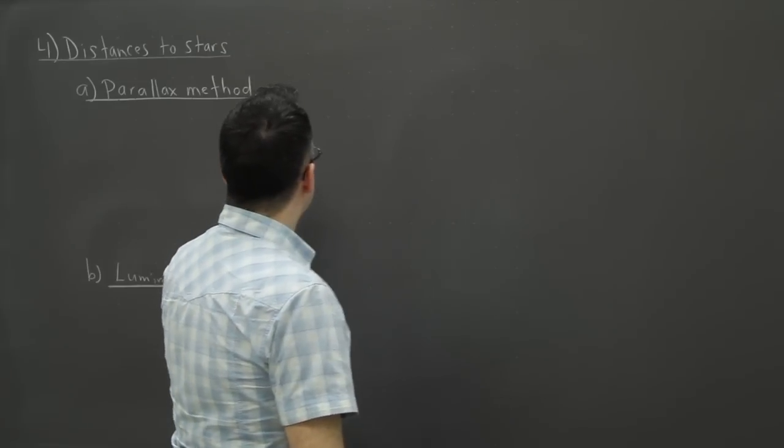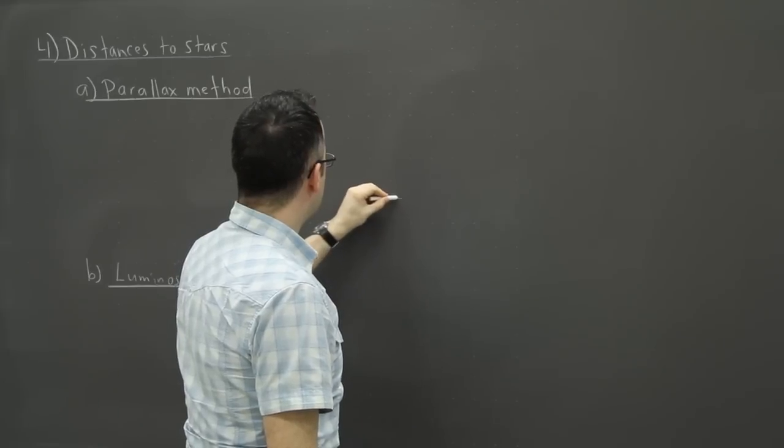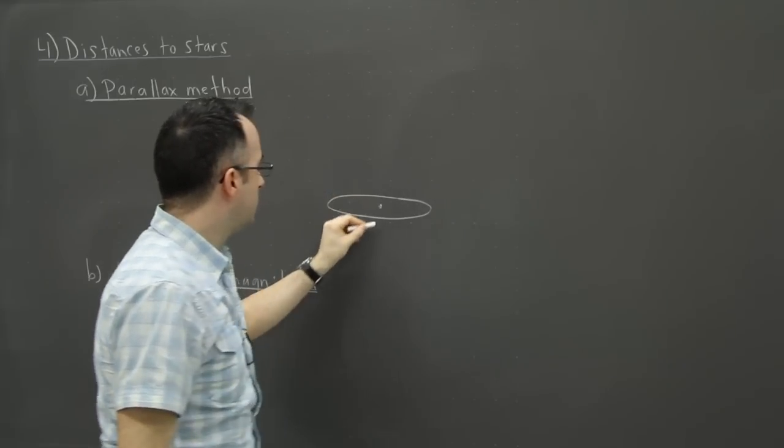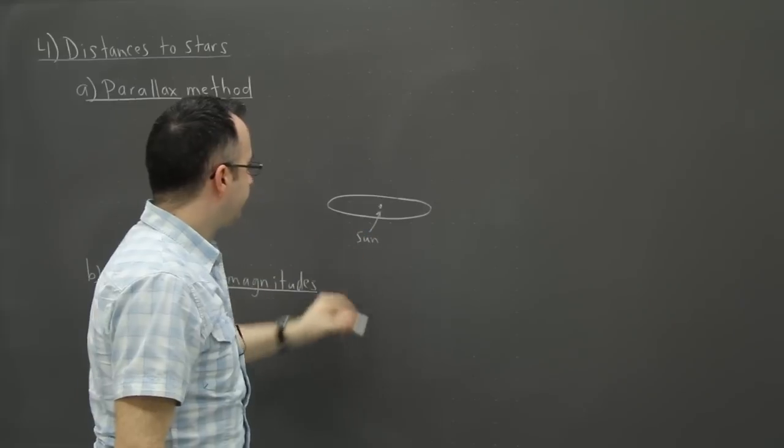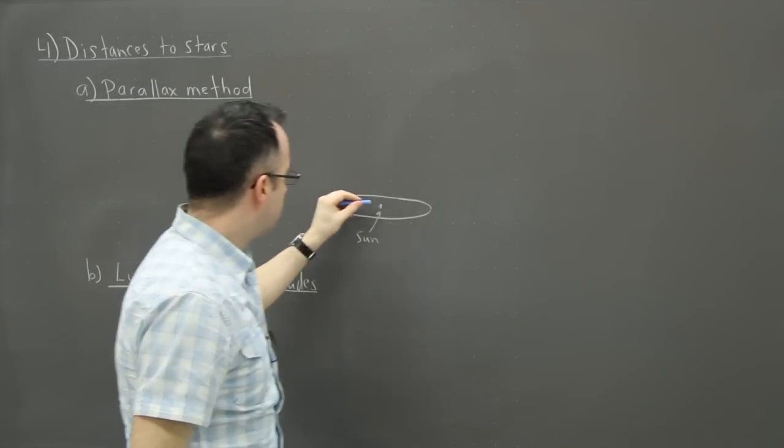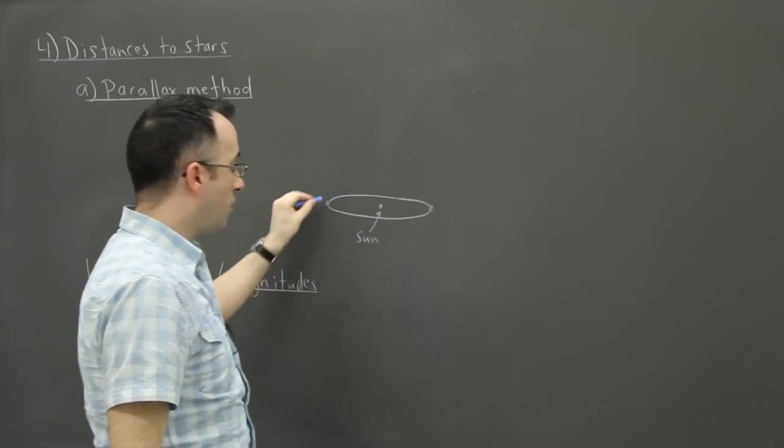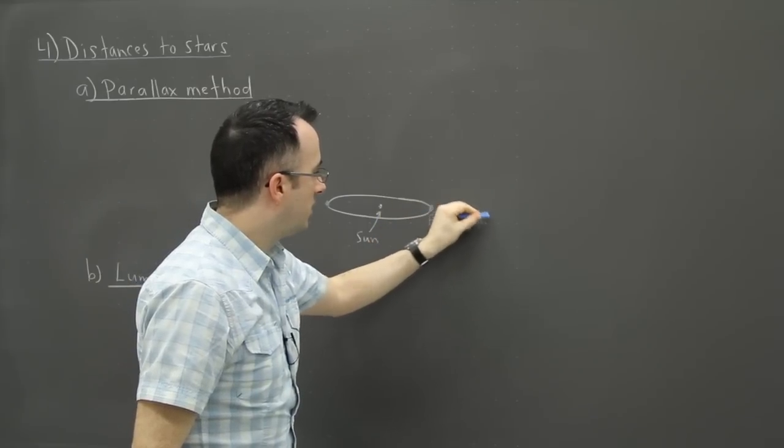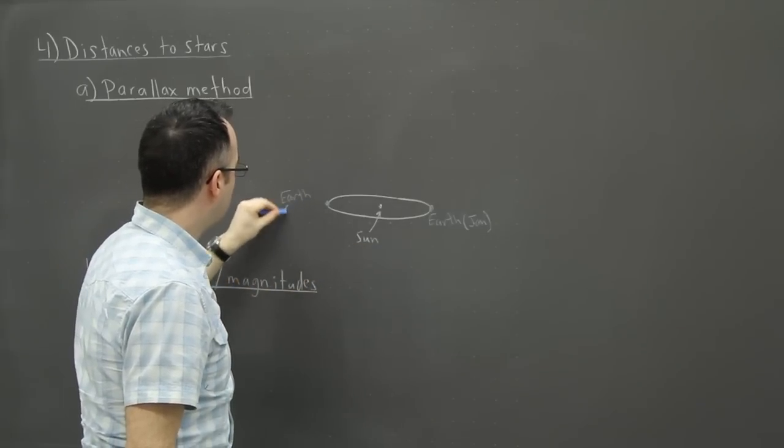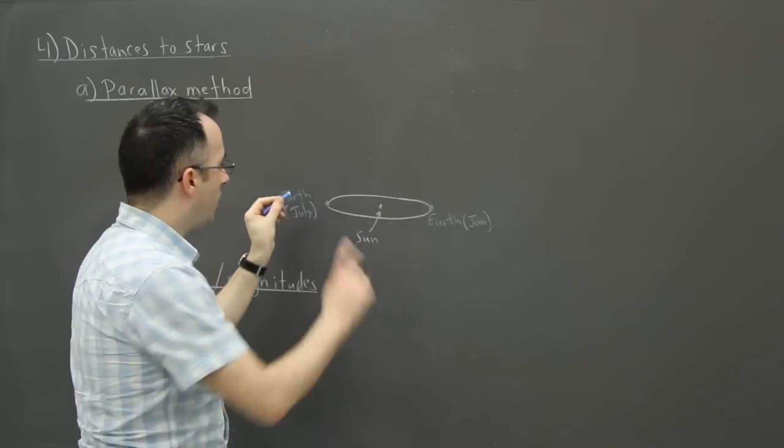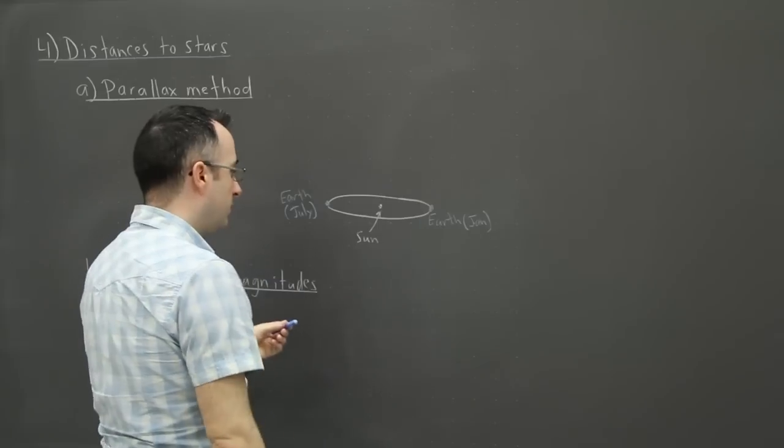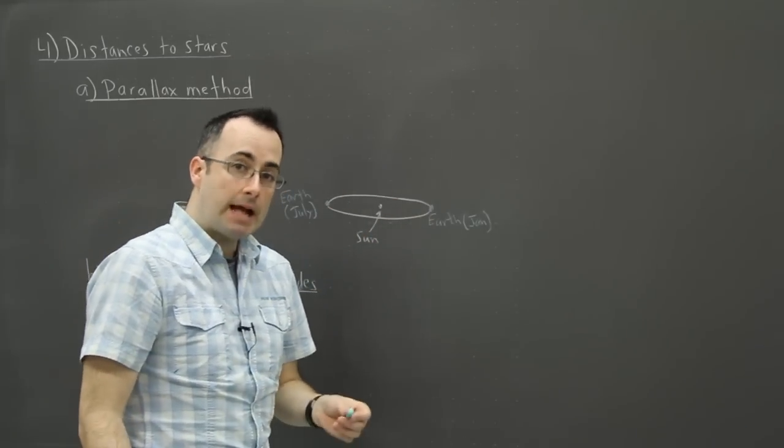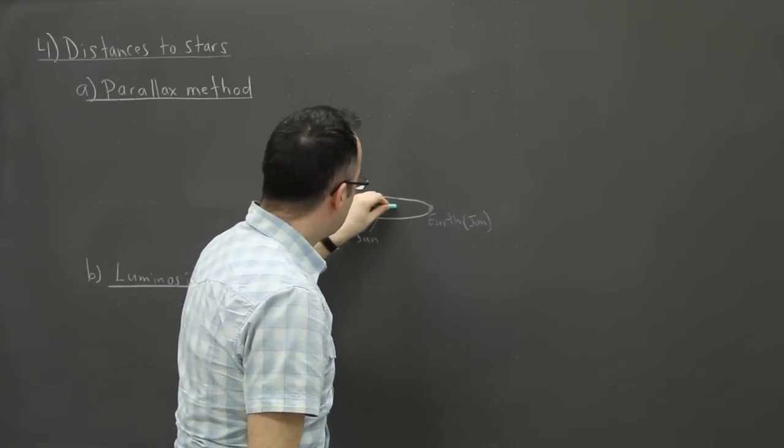Here's the idea. Let's say we're in orbit. This is the Earth going around in orbit around the Sun. This is the Earth maybe in January, and this could be the Earth maybe in July. Basically at opposite ends of the year. One thing that we know is the distance from the Earth to the Sun.